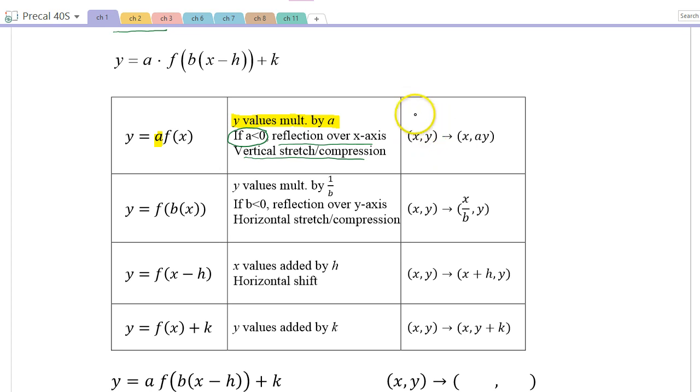So that's what happens. So in mapping notation, if you have, now this would be your parent function, that would be your original. Then any point on the parent function gets mapped onto (x, ay). So you see what happened is that I took the y value here and I multiplied it times a.